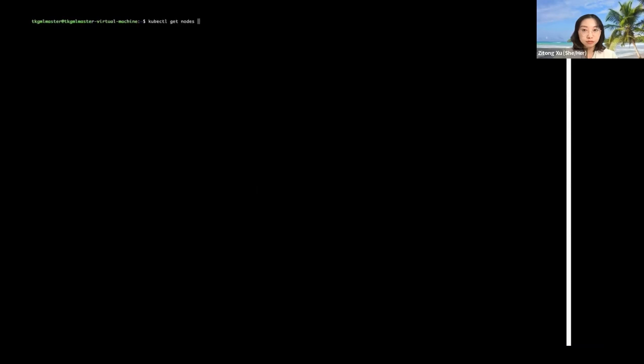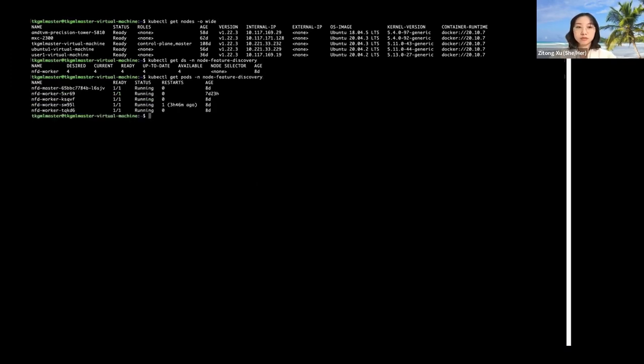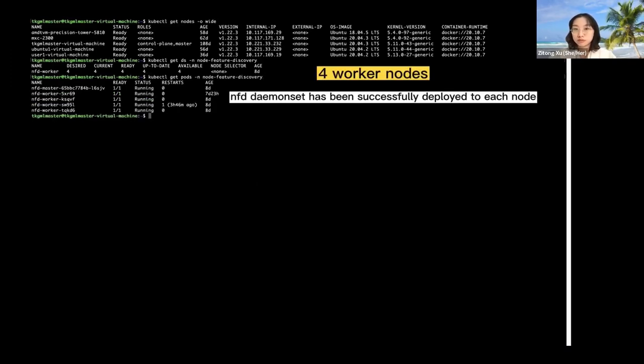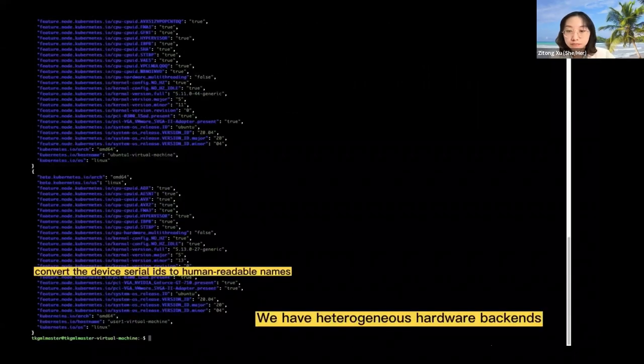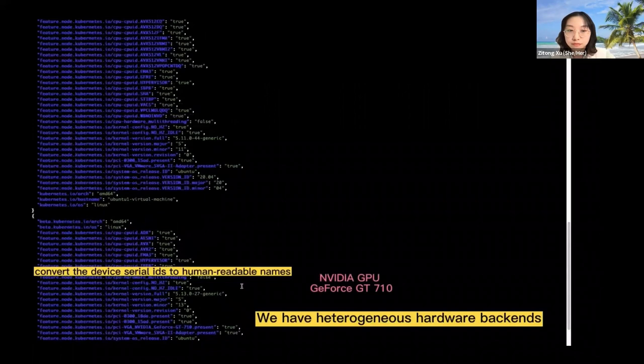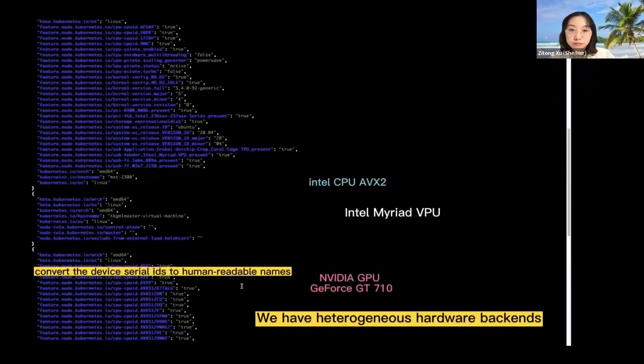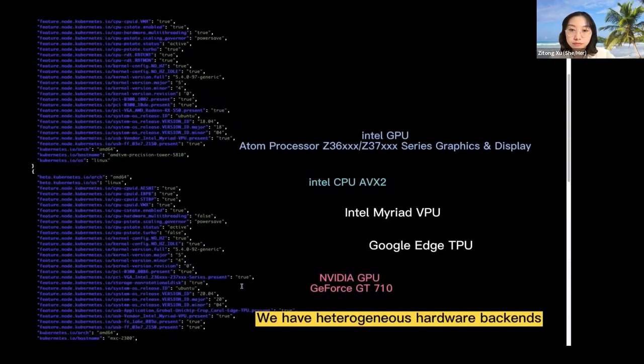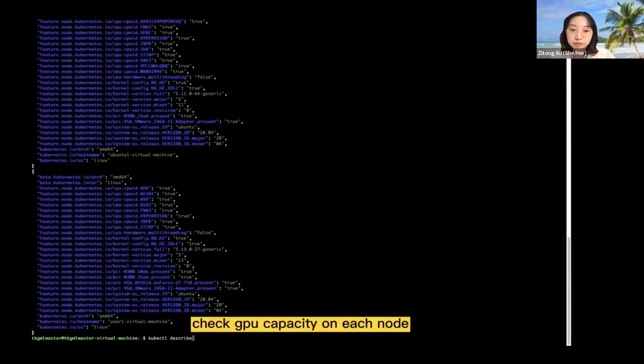Firstly, check nodes in Kubernetes cluster. Here we can see we already deployed the node feature discovery daemon set on each node and we have four worker nodes. We can check the node labels by using this Kubernetes command line. We have heterogeneous hardware backends with human-readable device names in our environment, for example, NVIDIA GPU, Intel CPU, Intel Myriad VPU, Google Edge TPU, Intel GPU, and AMD GPU.